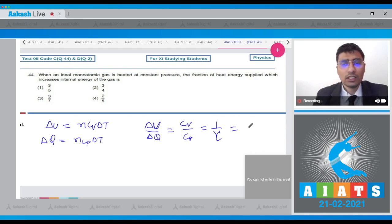This equals Cv by Cp, that is 1 by gamma. For a monatomic gas, gamma is 5/3, so this will be 3/5. That is option number 1.